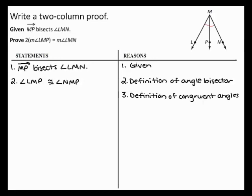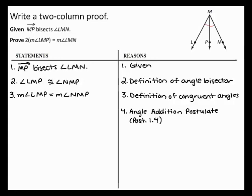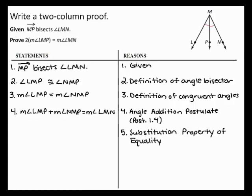Now, by the definition of congruent angles, you can state that the measure of angle LMP equals the measure of angle NMP. Next, you can use the angle addition postulate to add measures of adjacent angles. By the angle addition postulate, the measure of angle LMP plus the measure of angle NMP equals the measure of angle LMN. Now, because the measure of angle LMP equals the measure of angle NMP, you can use the substitution property of equality to substitute the measure of angle LMP for the measure of angle NMP in the equation in step 4.